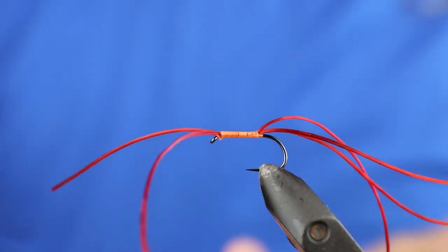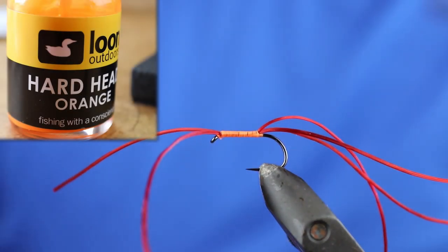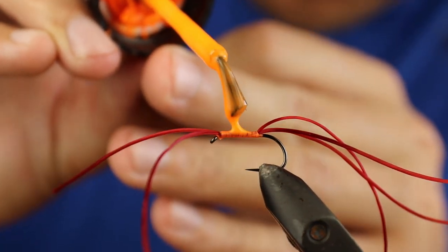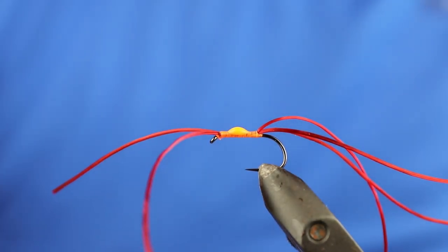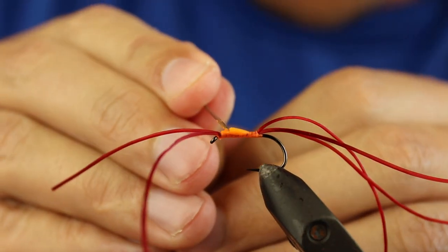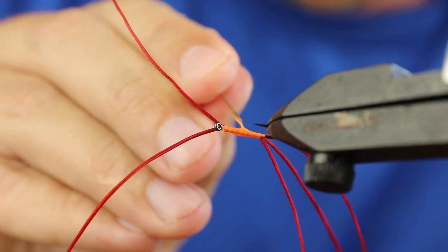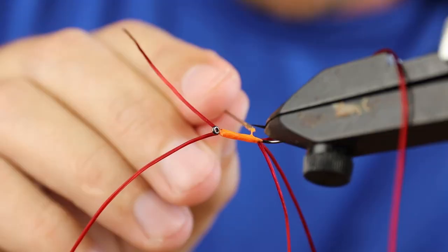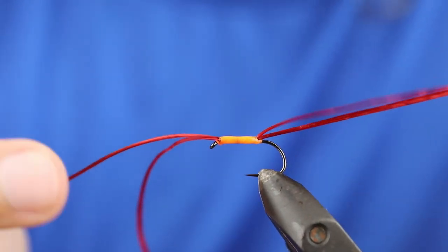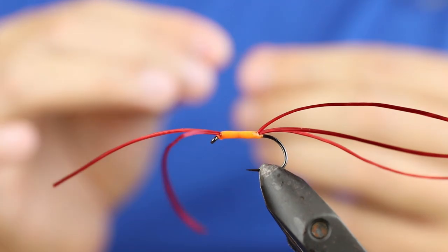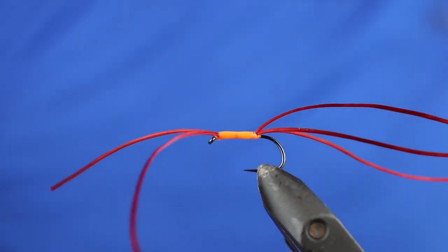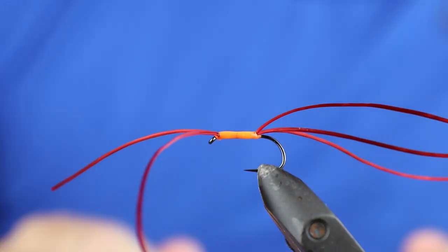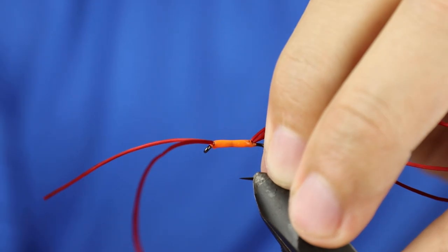The next step is to take some Loon Hard Head and we're going to use that as the body. So I'll just put the drop on and then take a needle and work your way around. So that's one coat. The way I do it is one coat, let it dry, two coats, let it dry, and then give it one coat of varnish just to harden the whole body up. So we'll put this one aside for now.